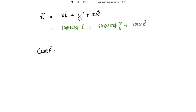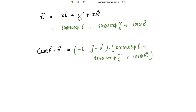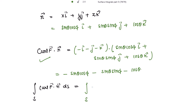The curl of f dot n vector: curl f is −i − j − k, and taking the dot product with n = sin θ cos φ · i + sin θ sin φ · j + cos θ · k gives −sin θ cos φ − sin θ sin φ − cos θ. For the surface integral, taking minus outside, we have sin θ cos φ + sin θ sin φ + cos θ, and ds in spherical polar coordinates is sin θ dθ dφ.